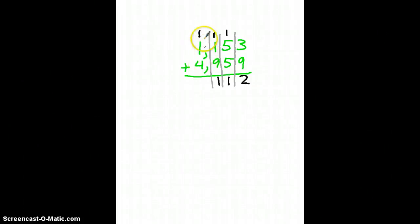1 plus 4 equals 5 plus 1 equals 6. I'm going to add my comma. My answer to 1,153 plus 4,959 equals 6,112.